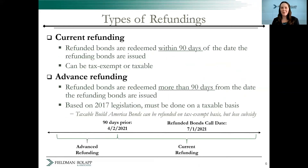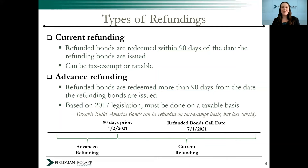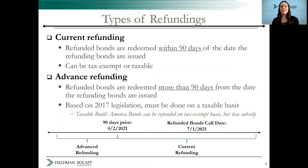So why is this important? There are two common types of refunding: current and advanced. A current refunding is when the outstanding bonds are redeemed within 90 days of when the new refunding bonds are issued. These can either be done on a tax-exempt or taxable basis. An advance refunding is when the outstanding bonds are redeemed more than 90 days out.